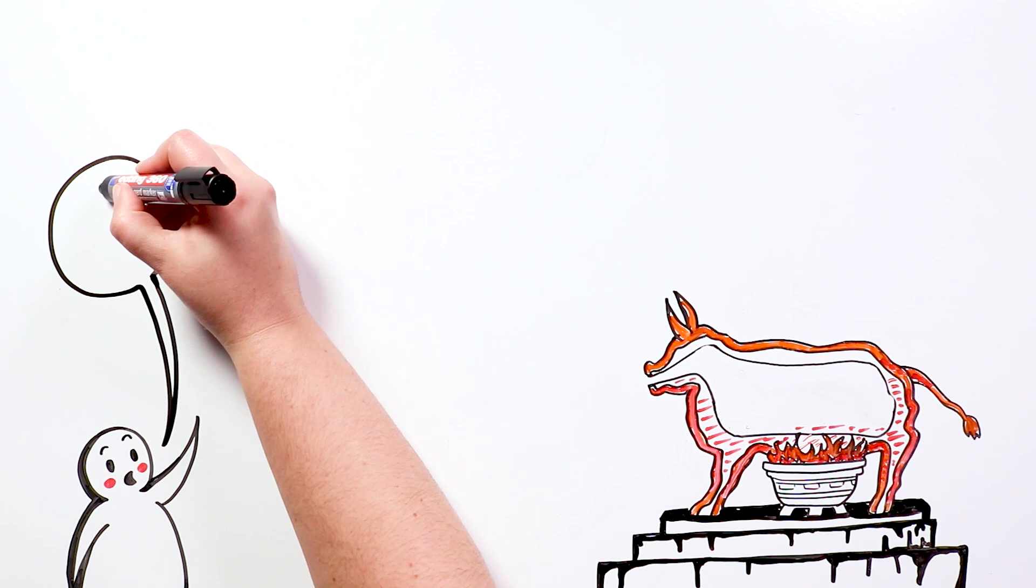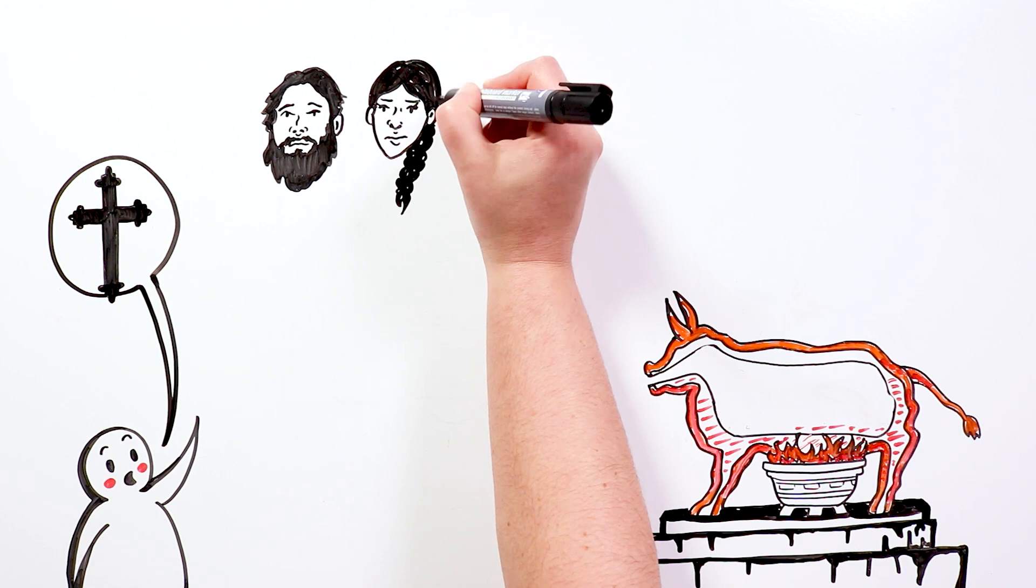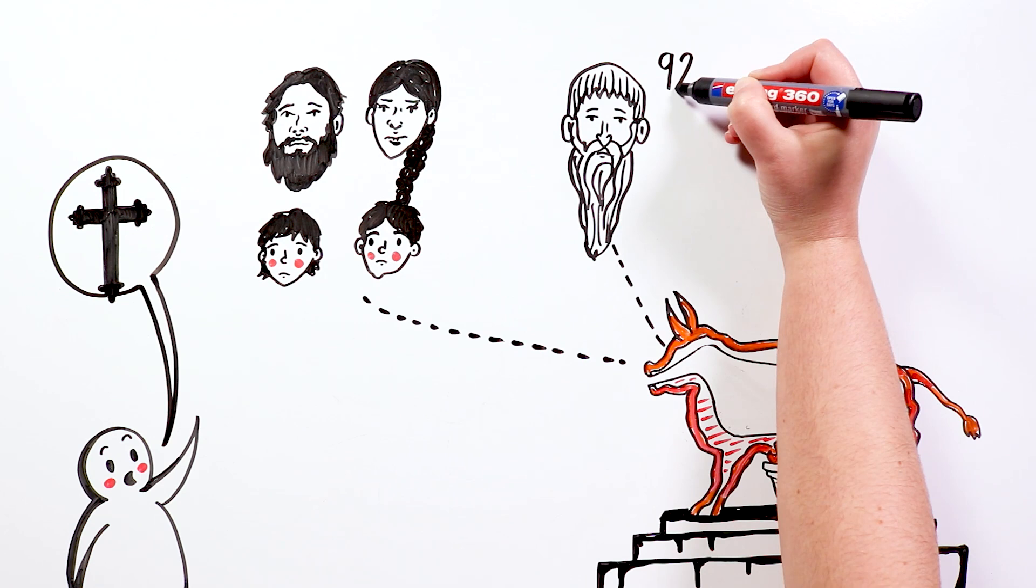The Romans were reputed to have used this method of torture to kill some Christians, such as Saint Eustace, who according to tradition, was roasted on a bronze bull with his wife and children by the Emperor Hadrian. The same thing happened to Saint Antipas, a bishop who was roasted to death on another bronze bull in 1892.